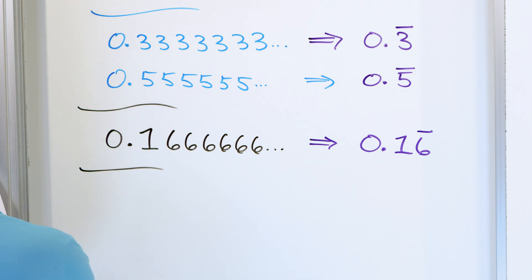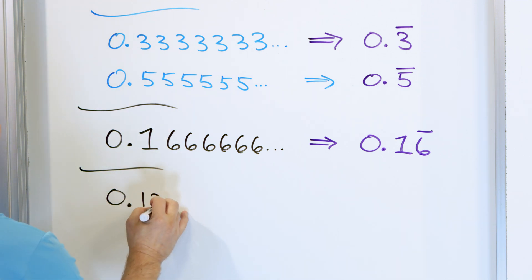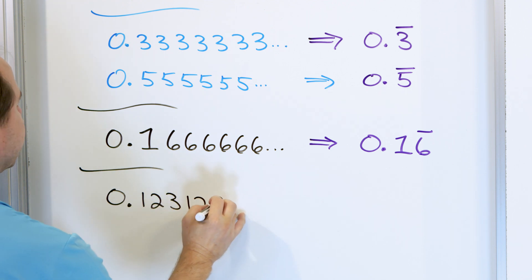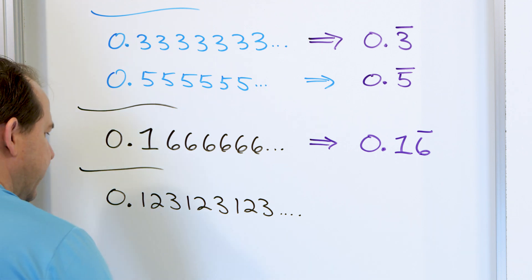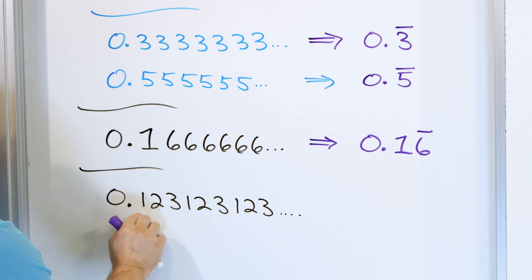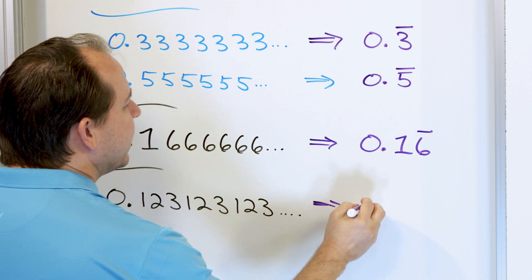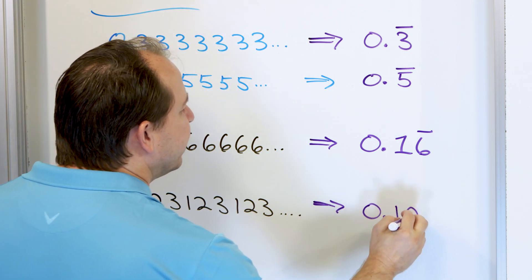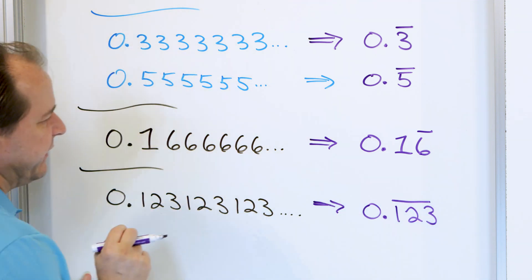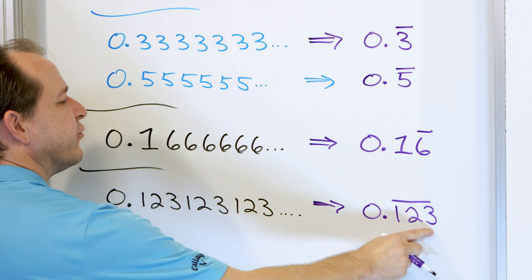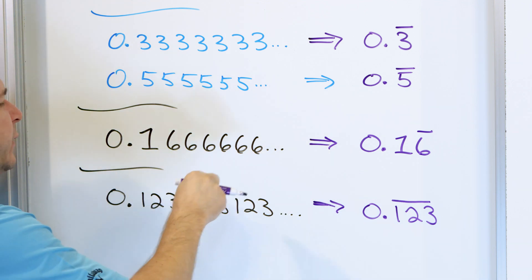You can have other patterns as well. Consider 0.123123123... — the one, two, and three as a group are what are repeating. So you write 0.123 with the bar going over all three digits, telling you that the grouping one-two-three is what repeats: one, two, three, one, two, three.